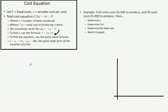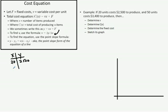We'll determine the variable cost first. We can write a little table with X and Y. When X is 20 units, Y — our cost — is 2,500. When X is 50 units, the cost is 3,400 to produce.